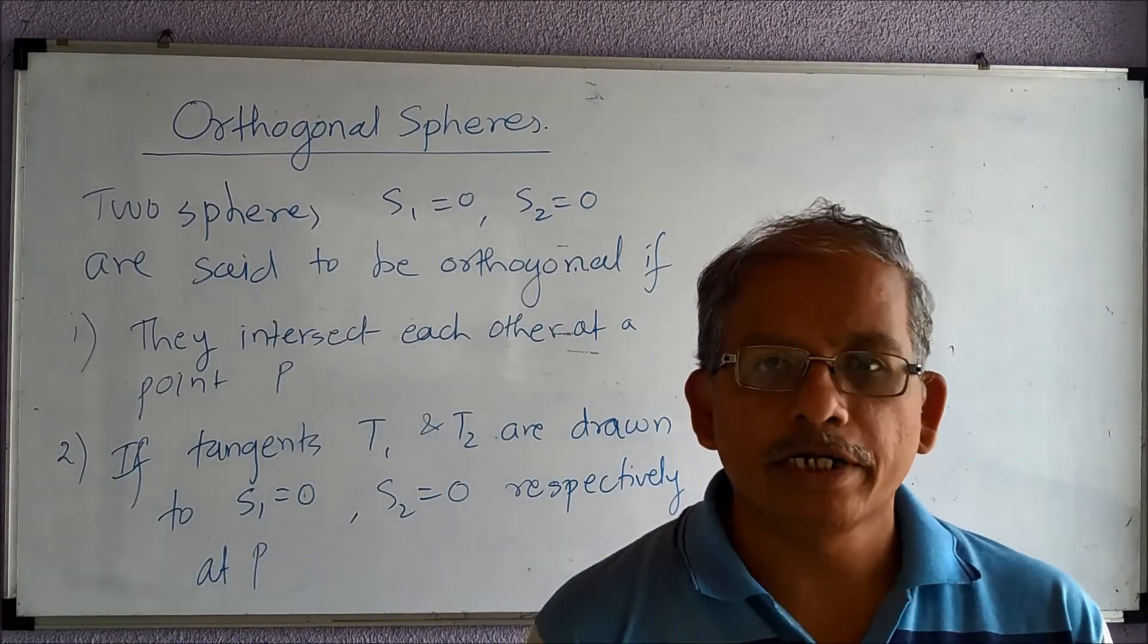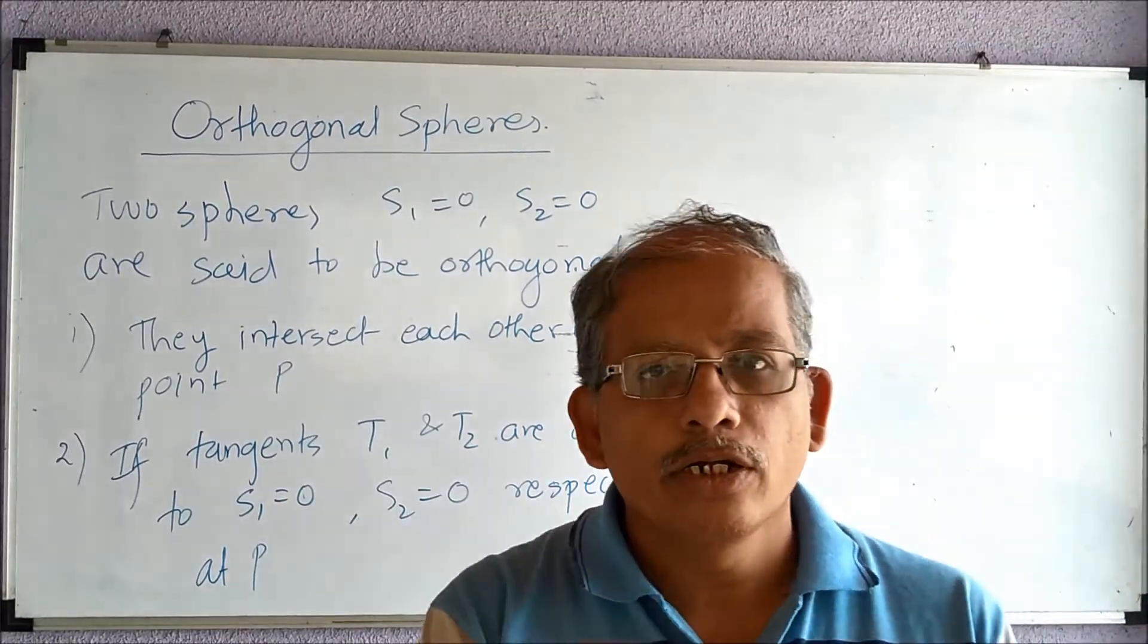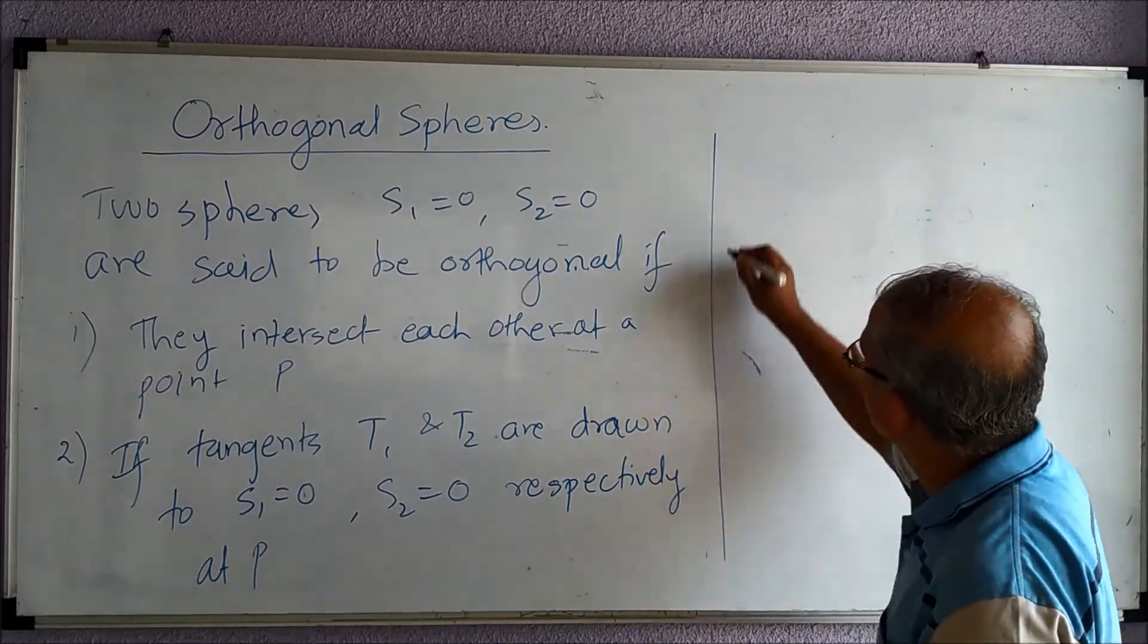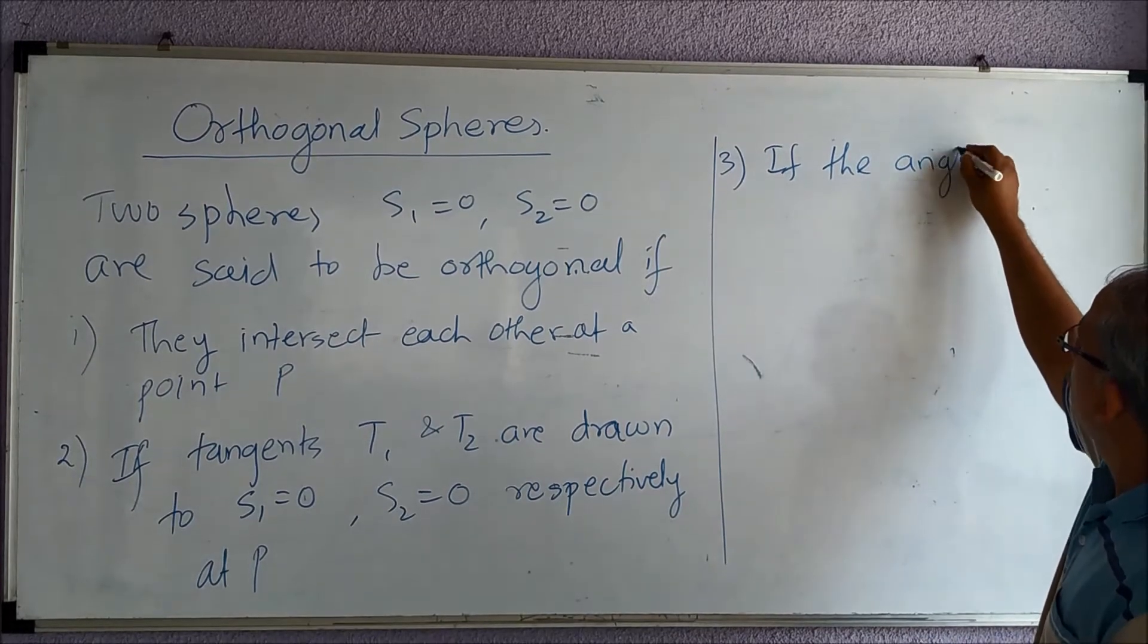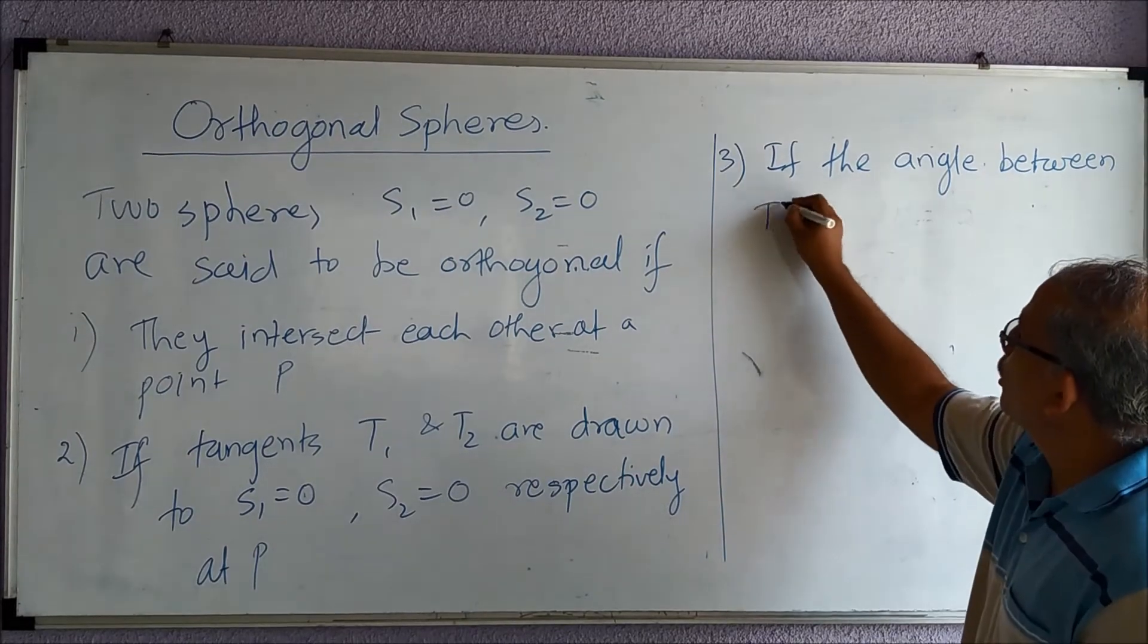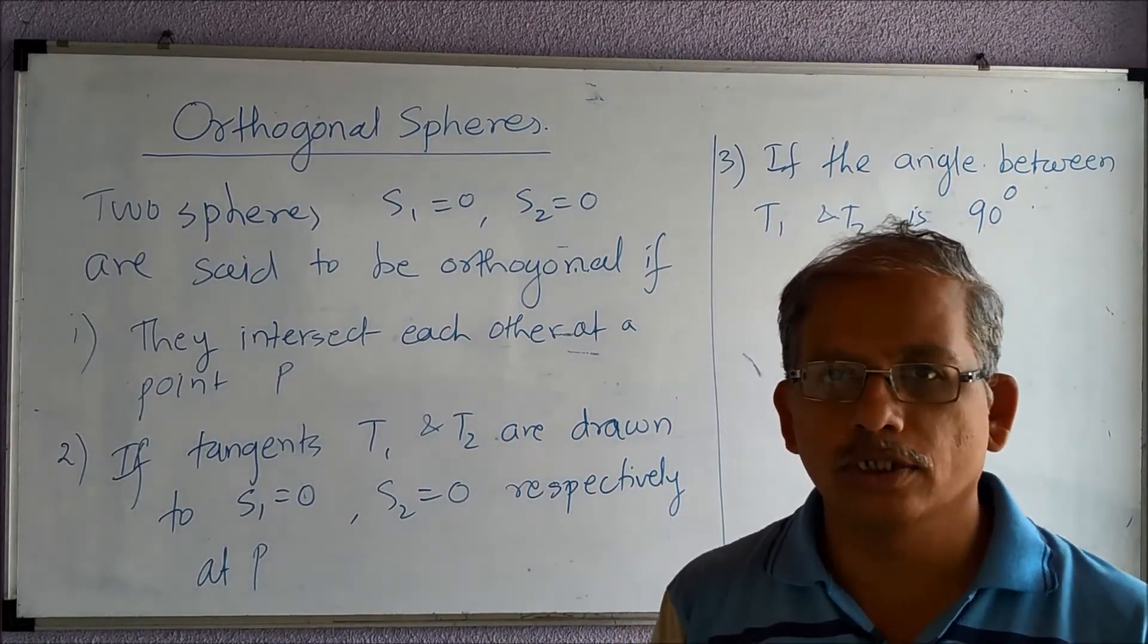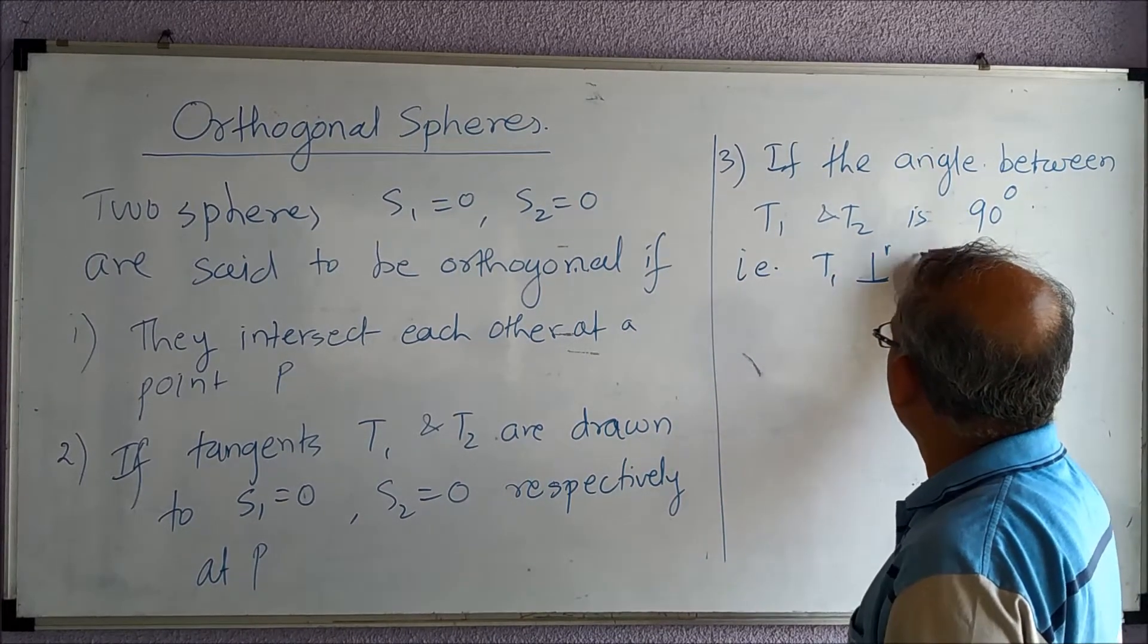So we are taking two spheres which are intersecting at a point, and at that point we are drawing two tangents. If the angle between t1 and t2 is 90 degrees, that means t1 and t2 are perpendicular to each other.